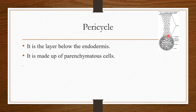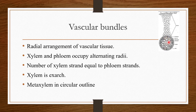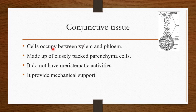Next is the pericycle. It lies below the endodermis and is made up of parenchyma cells. In roots, vascular bundles are arranged radially — that is, xylem and phloem alternate in a radial arrangement, and the number of xylem strands equals the phloem strands. The xylem in root is in exarch condition, meaning protoxylem faces towards the periphery and metaxylem faces towards the central region. The metaxylem is circular in outline.